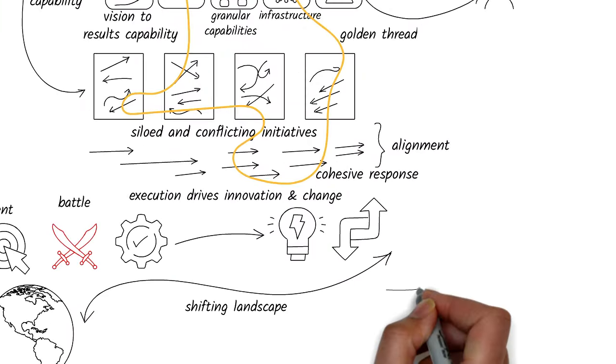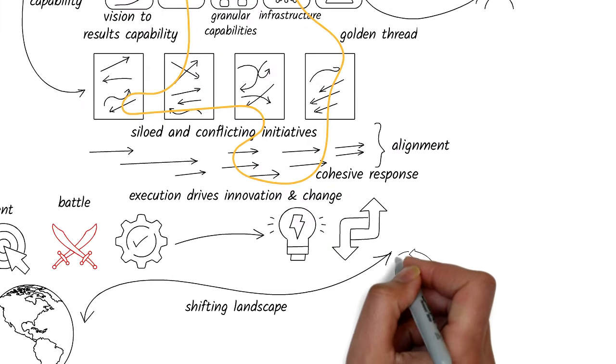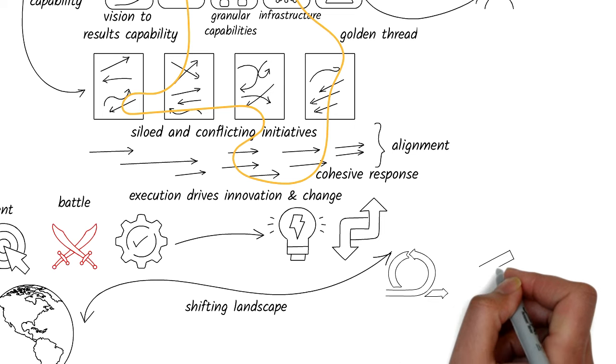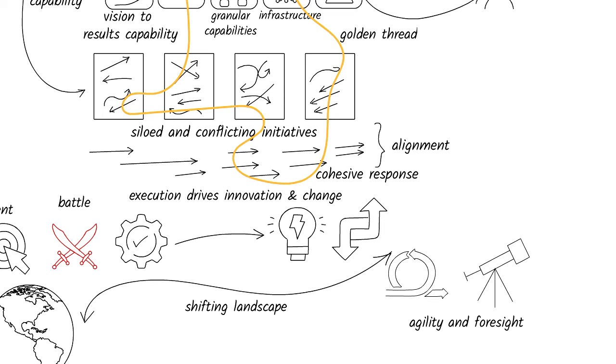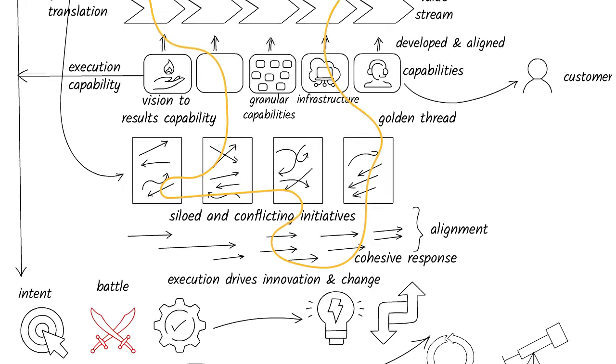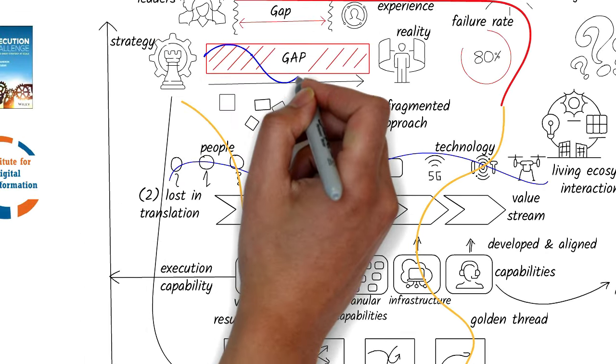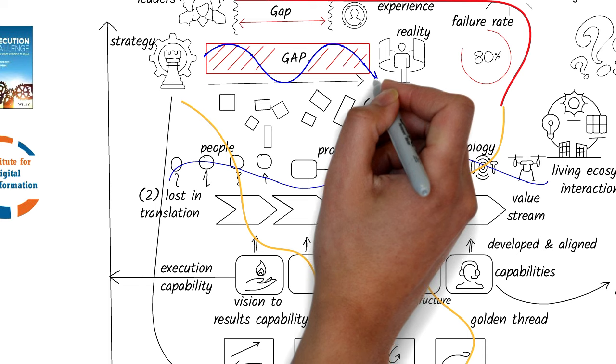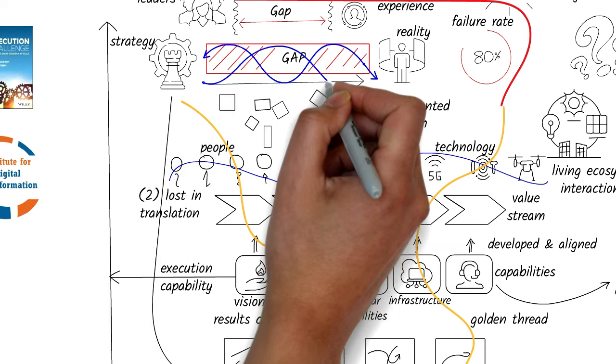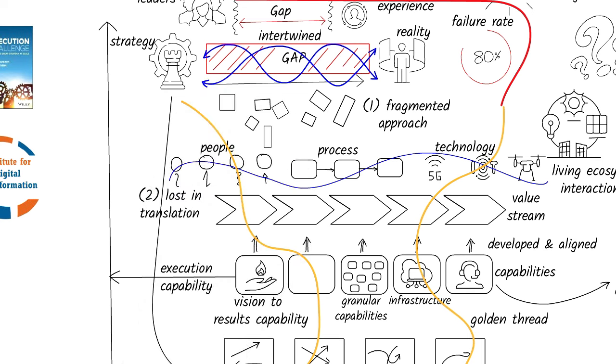Defining the strategy and portfolio of work is just the beginning, though. In a world where change is the only constant, organizations must become adept at responding to shifts with agility and foresight. This requires a mechanism for continual response, much like a living organism's reflex to its environment. Strategy and execution become intertwined, allowing an organization to pivot and adapt as circumstances evolve without losing sight of its long-term objectives.